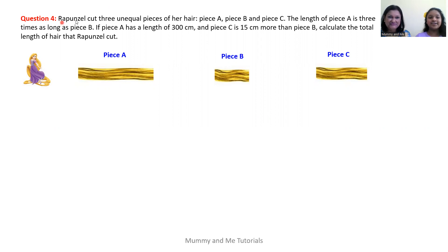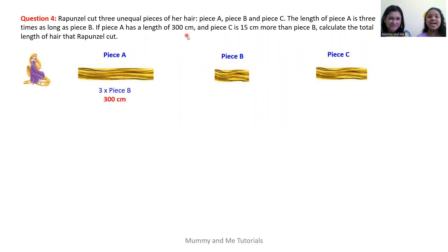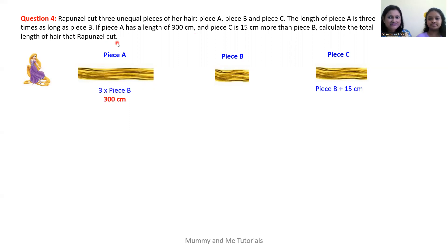Rapunzel cut three unequal pieces of her hair: piece A, piece B, and piece C. The length of piece A is three times as long as piece B. If piece A has a length of 300 centimeters, and piece C is 15 centimeters more than piece B, calculate the total length of hair that Rapunzel cut.